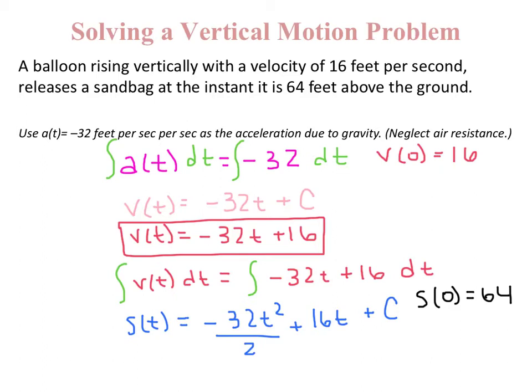So plugging that in, my final position function will be negative 16t squared plus 16t plus 64.